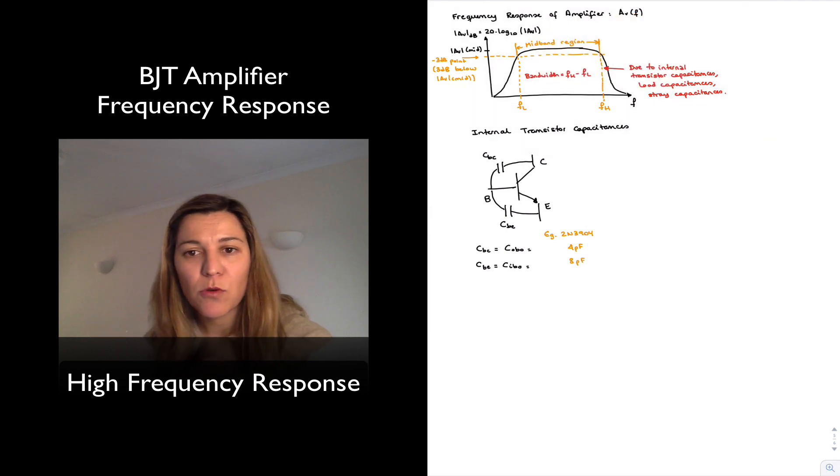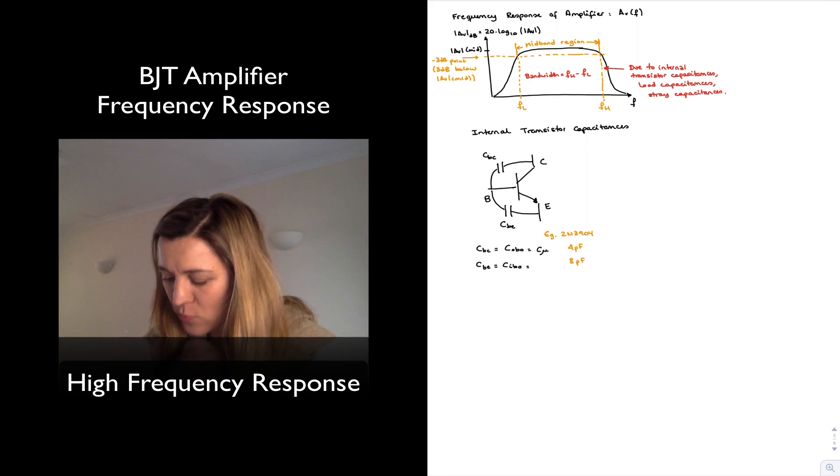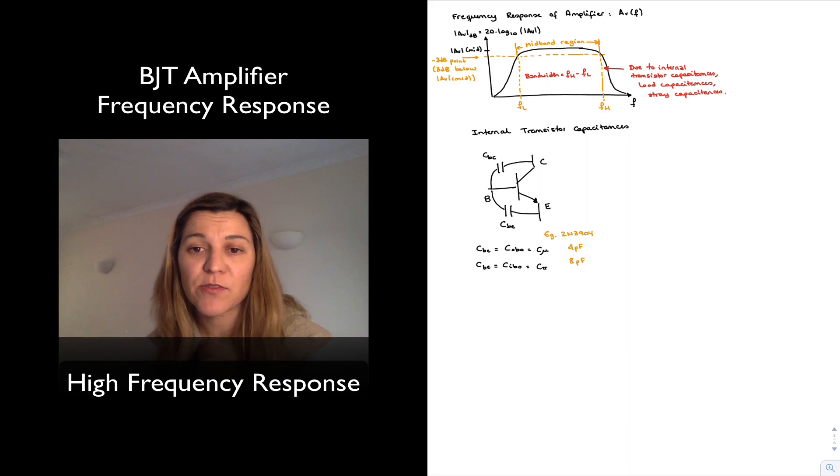And when you look at most textbooks and papers and things like that, they will refer to CBC as C mu, and CBE as C pi. And that terminology just comes from the capacitances that are included in the high frequency hybrid pi model for the BJT transistor.